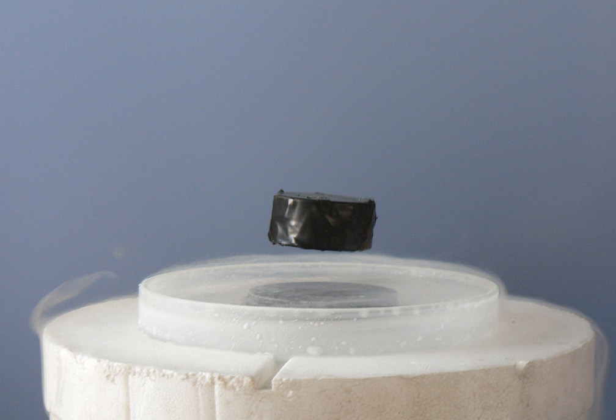By material: Superconductor material classes include chemical elements e.g. mercury or lead, alloys such as niobium-titanium, germanium-niobium, and niobium nitride, ceramics, YBCO and magnesium-diboride, superconducting pnictides or organic superconductors, fullerenes and carbon nanotubes, though perhaps these examples should be included among the chemical elements, as they are composed entirely of carbon.